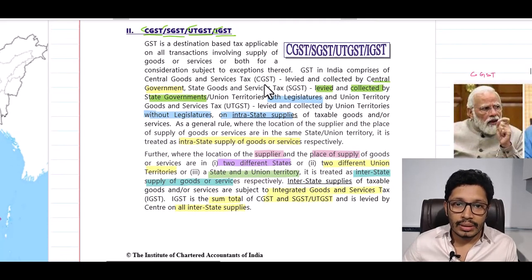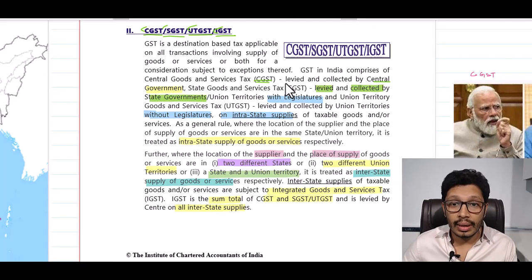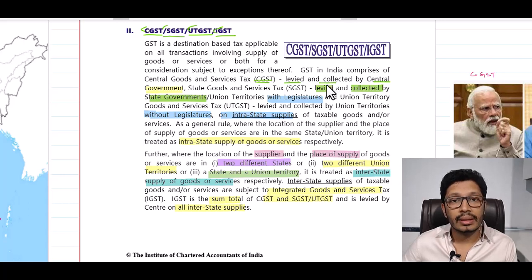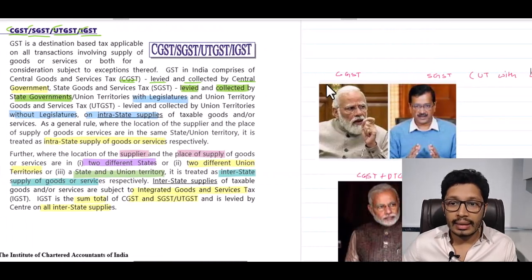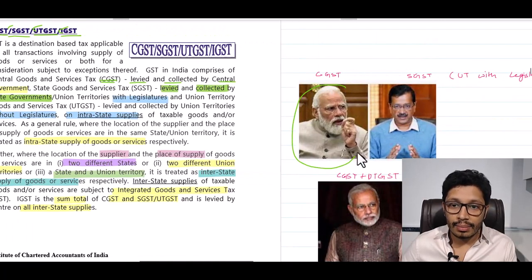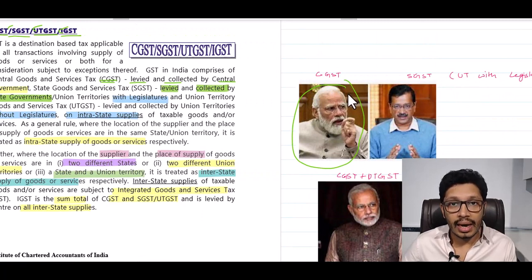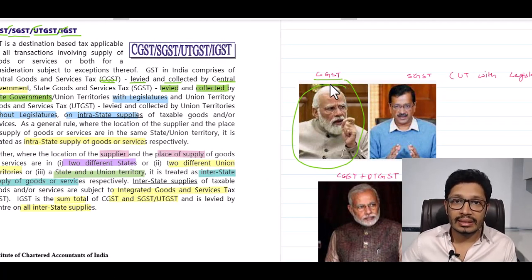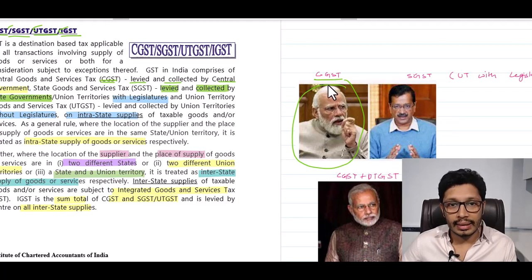CGST is the Central Goods and Service Tax, which is levied and collected by the central government. If you look at this picture, this is Modi Ji's government — the central government will levy and collect CGST.